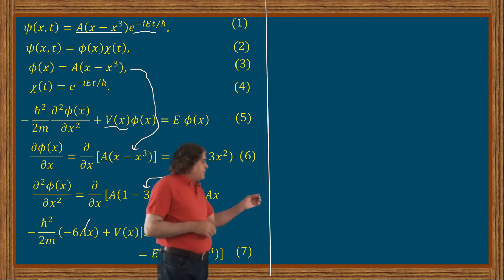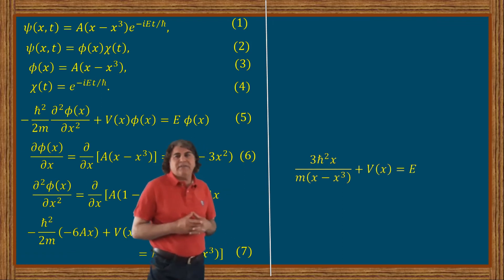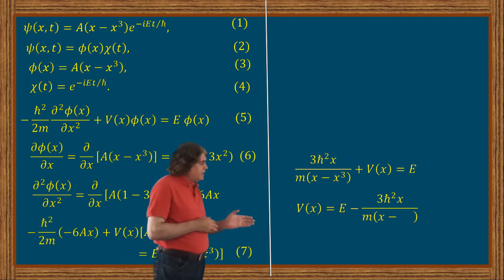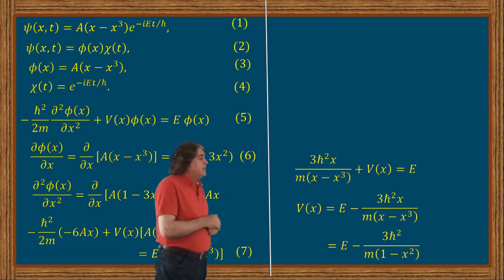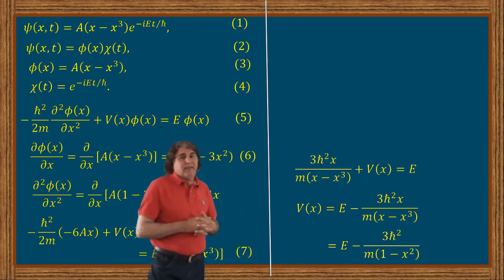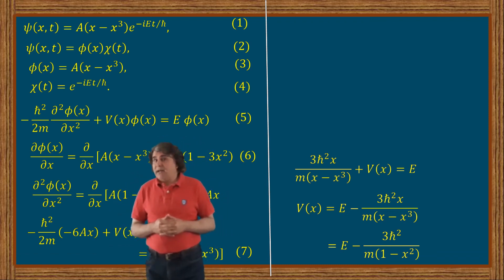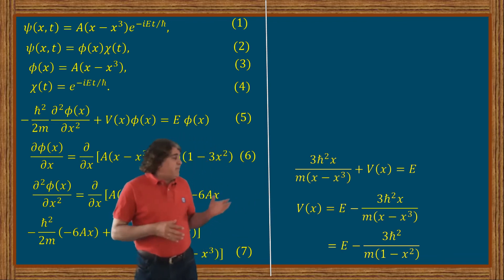Equation 7 can straight away be put into a simplified form where I divide every term by (x − x³). This can be solved for the potential V(x) by taking the first term to the right and canceling x in the denominator and numerator of the second term on the right, writing the potential finally in the form V(x) = E − (3ℏ²/m)(1 − x²).